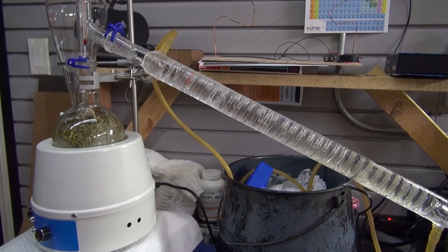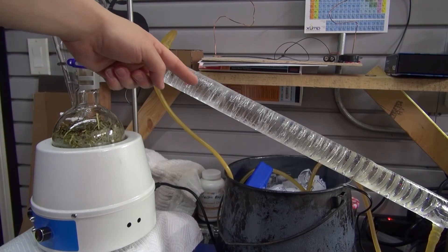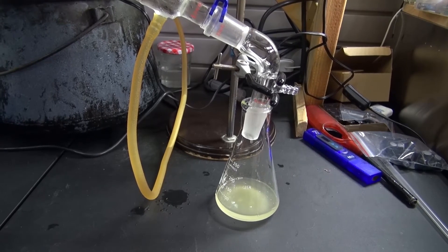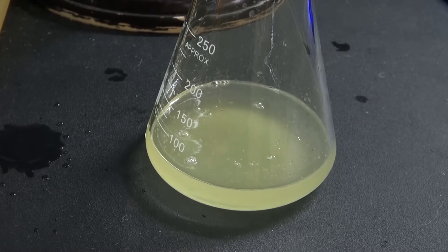20 minutes later, and as you can see the water is boiling and the steam is being condensed inside of the Graham condenser. Rosemary essential oil and hydrosol is being collected inside this Erlenmeyer flask. But this color is a little bit concerning, I believe it's contaminated.